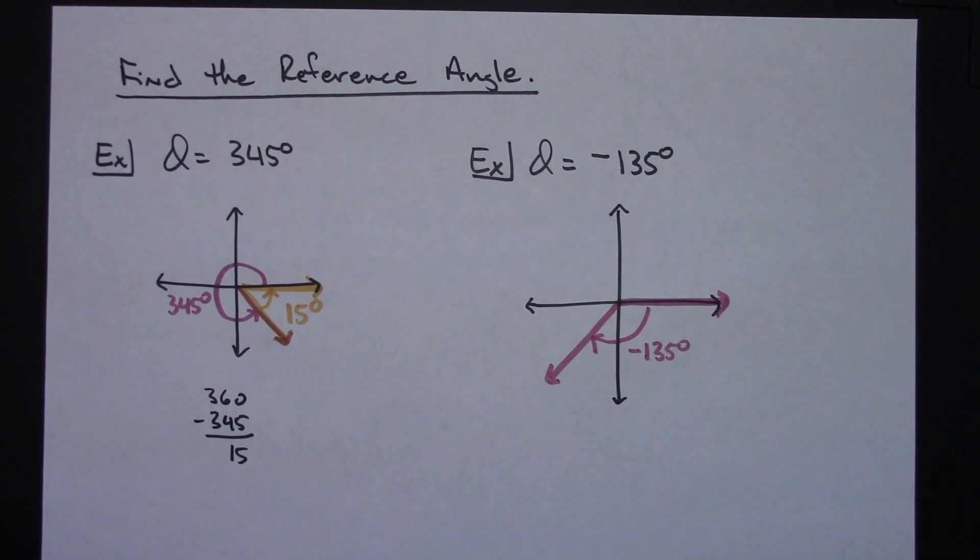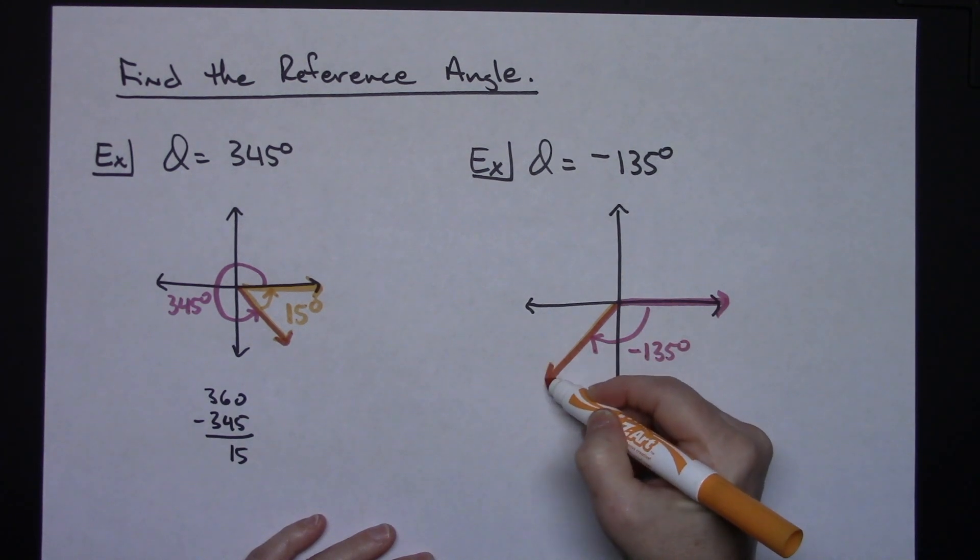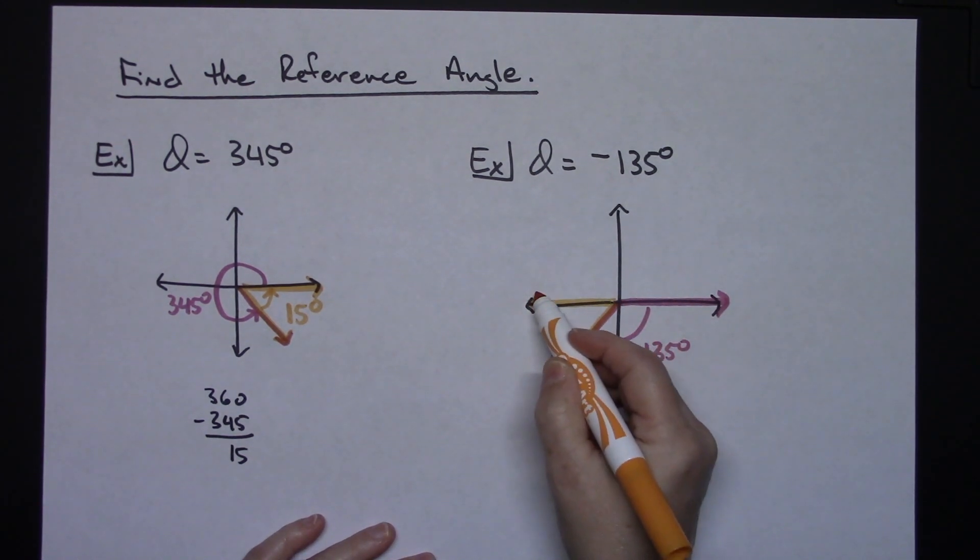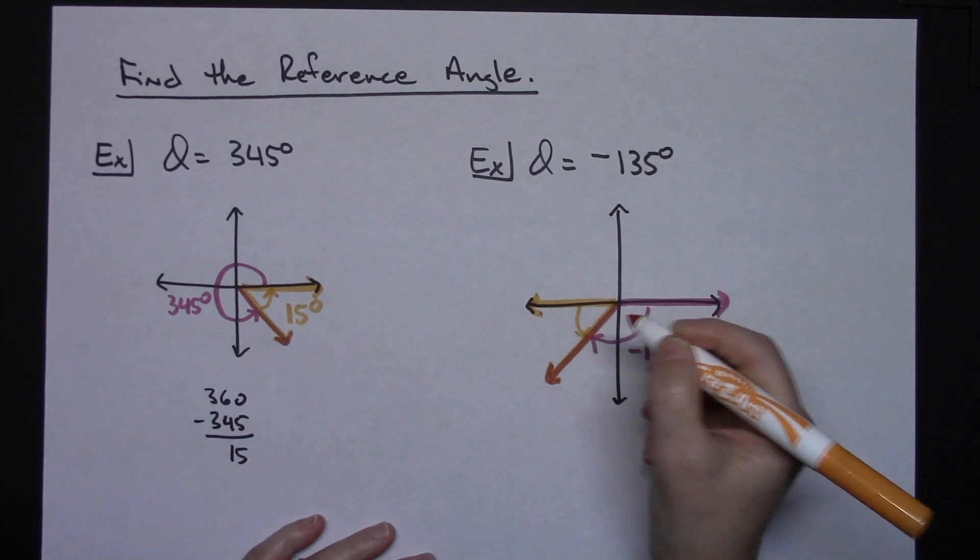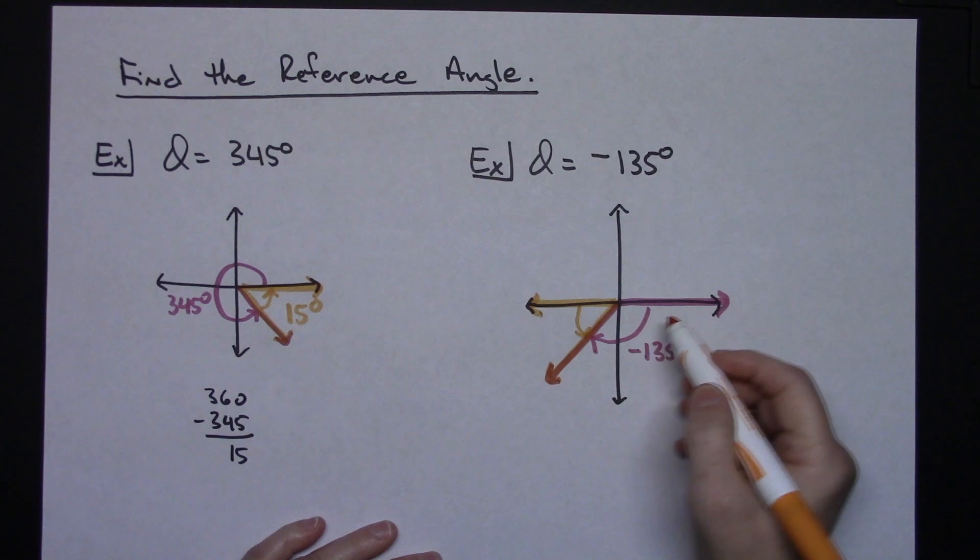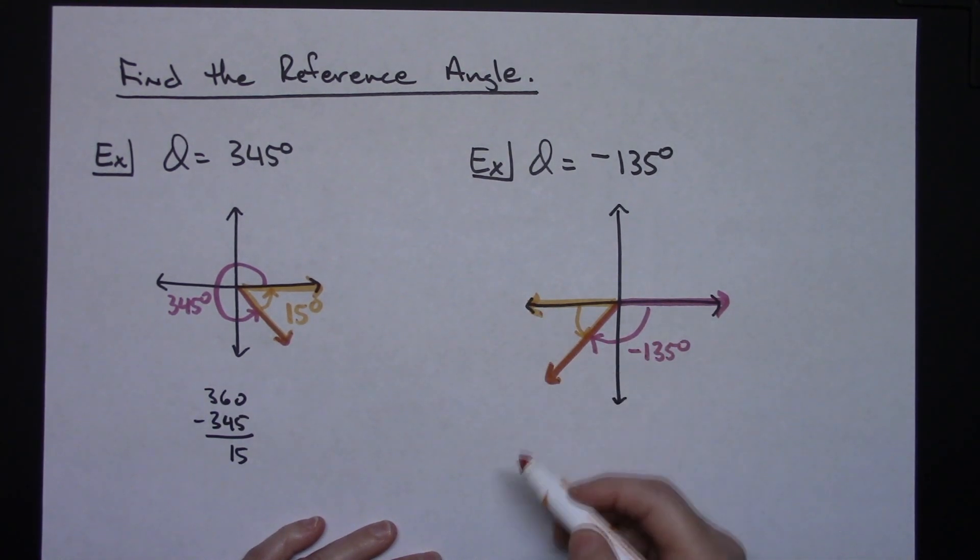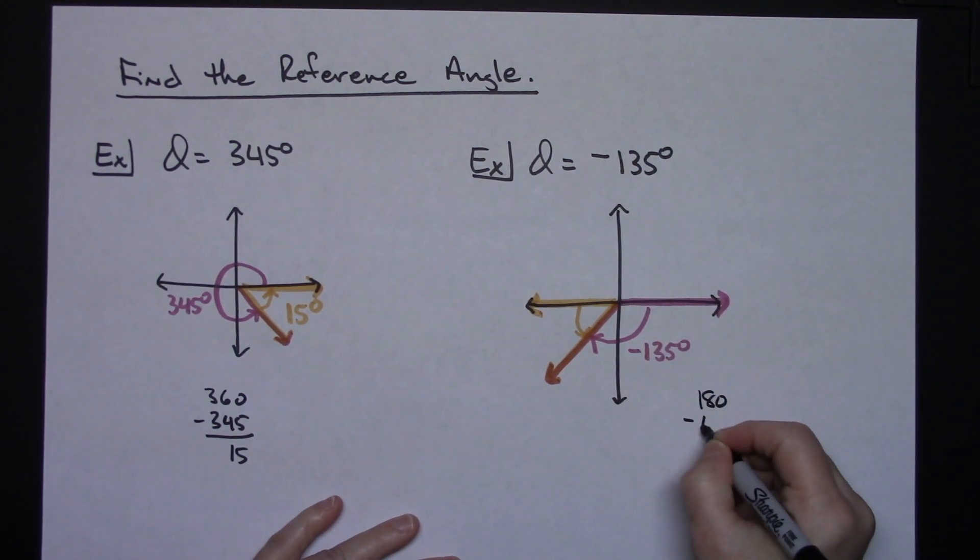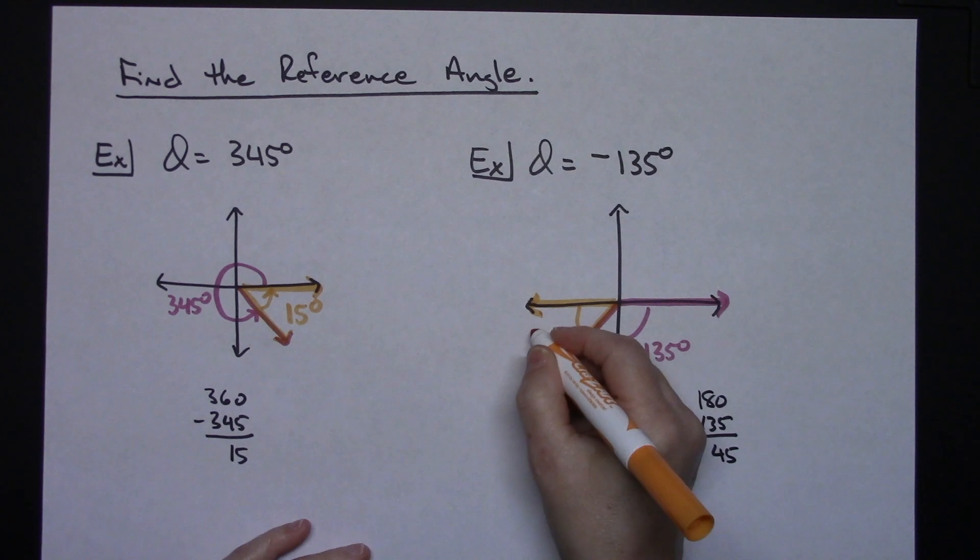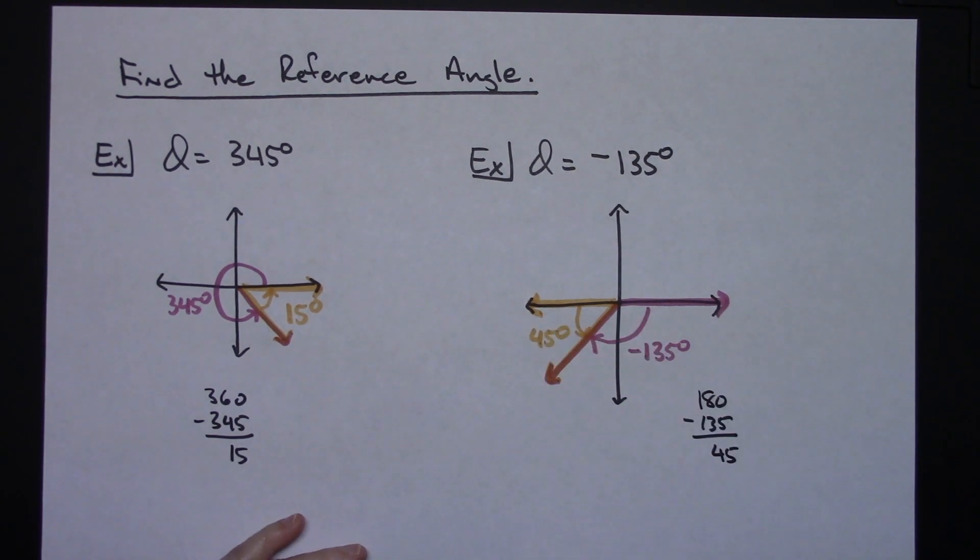Now I'm looking for a reference angle that is formed between that terminal side and the x-axis. It needs to be positive, it needs to be acute. So we're looking for this angle right in there. I know that halfway around my circle is 180 degrees. So all I need to do is take my 180 degrees and subtract 135 and that's going to give me 45 degrees. So this reference angle right here has to be 45 degrees.